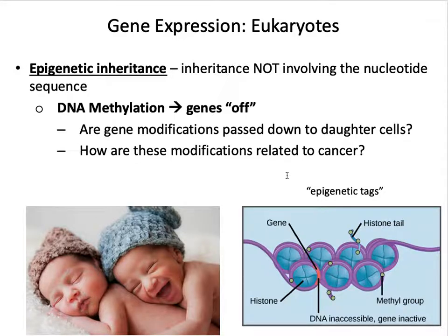Throughout our life, some genes will be turned off as we no longer need them. DNA methylation can be reversible — an enzyme can remove the methyl group and turn those genes back on. These gene modifications are passed down to daughter cells: during DNA replication, DNA polymerase replicates the DNA strands and also replicates the DNA methyl groups, so they are inherited through cell divisions. How are these modifications related to cancer?